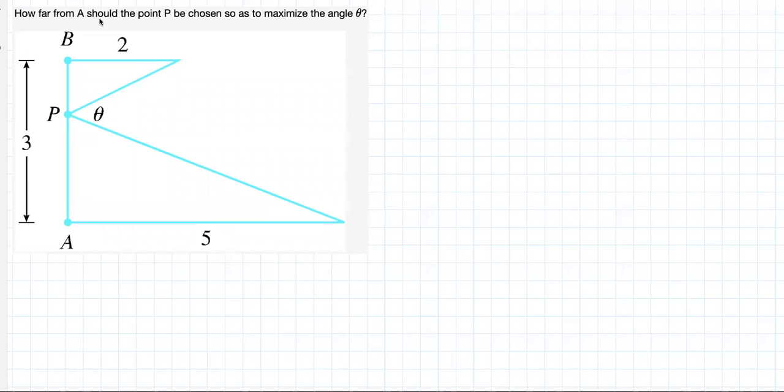How far from A should the point P be chosen so as to maximize the angle theta? Okay, as usual, let's start by labeling some distances. The distance from A to P, I'm going to call that x. Therefore, the distance from P to B should be 3 minus x.